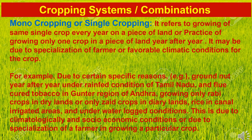Now we will discuss about different cropping systems and combinations. First one is monocropping or single cropping. It refers to growing of the same single crop every year on a piece of land, or the practice of growing only one crop on a piece of land year after year. It may be due to specialization of farmers or favorable climatic conditions for the crop. For example, groundnut is grown year after year in Tamil Nadu, and flue-cured tobacco in the Guntur region of Andhra Pradesh, growing only rabi crops in dry lands or only kharif crops in irrigated lands, rice in canal irrigated areas. This is due to climatological and socio-economic conditions or due to specialization of a farmer in growing a particular crop.